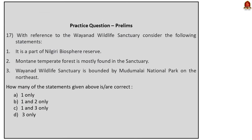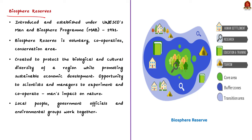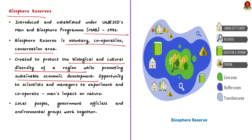Our next topic is the Nilgiri Biosphere Reserve. The concept of Biosphere Reserve was introduced under UNESCO's Man and Biosphere Program in 1971. A Biosphere Reserve is a voluntary, cooperative conservation area created to protect the biological and cultural diversity of a region while promoting sustainable economic development — balancing biodiversity with economic development. It provides an opportunity for scientists and managers to generate data on humanity's impact on nature, where local people, government officials, and environmental groups work collaboratively on conservation and development issues.